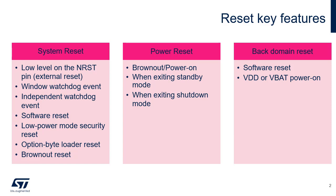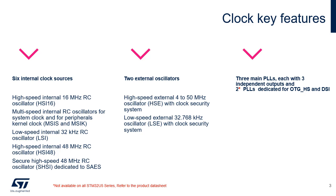This slide presents the three reset types and sources of reset. STM32U5 microcontrollers embed six internal oscillators, two oscillators for an external crystal or resonator, and up to five phase-locked loops, or PLLs. Many peripherals have their own clock, independent of the system clock. The STM32U5 RCC provides high flexibility in the choice of clock sources, allowing the system designer to meet both power consumption and accuracy requirements.